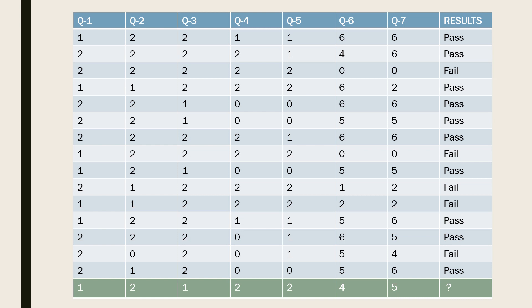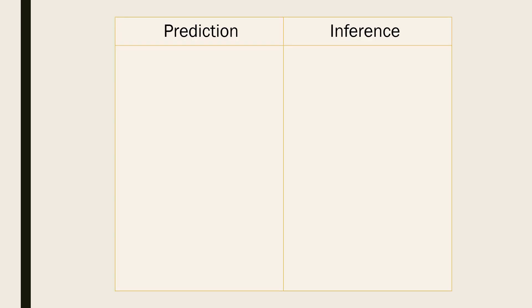But in inference, getting a correct prediction is not the priority. We are more concerned about finding and understanding the relationship and dependencies between the variables. So, representing the difference between prediction and inference in a tabular format will be...